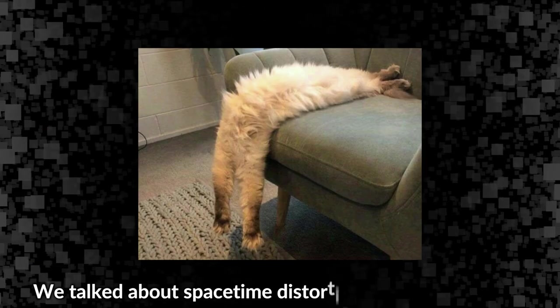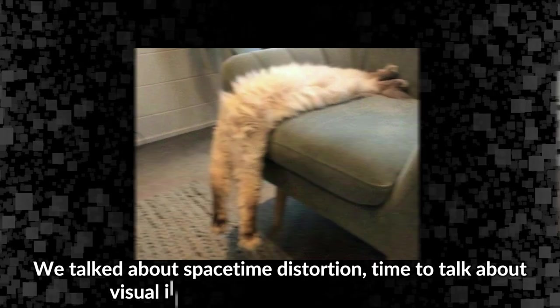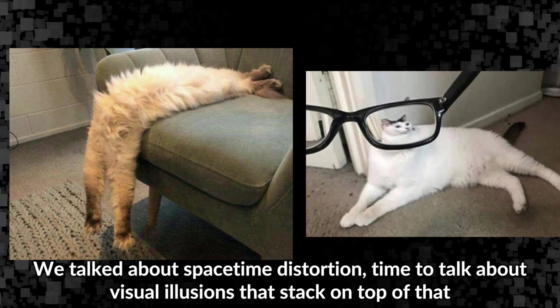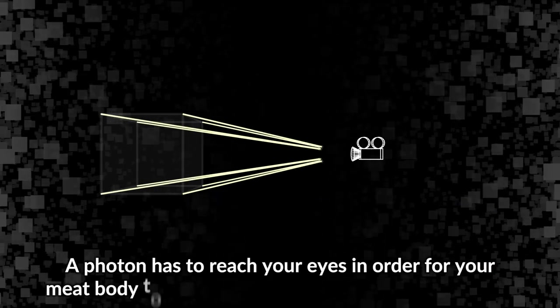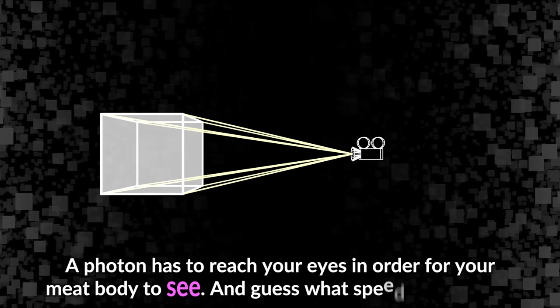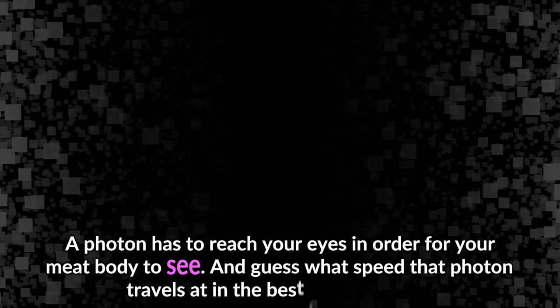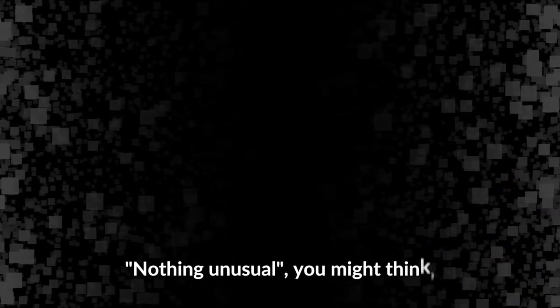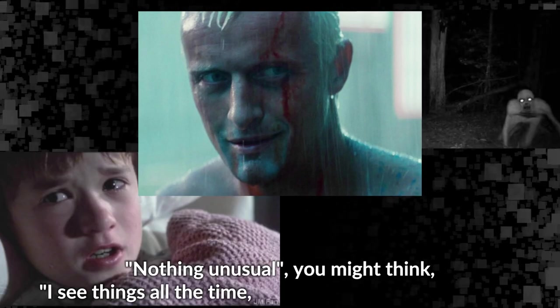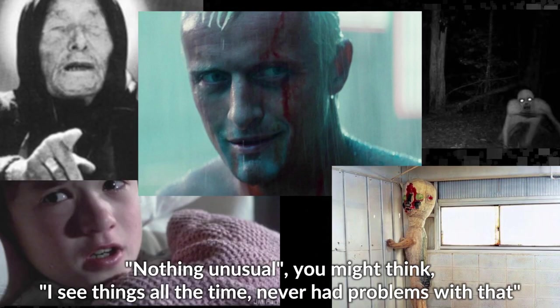But back to special relativity, we are not done yet. We talked about space-time distortion - time to talk about visual illusions that stack on top of that. A photon has to reach your eyes in order for your meat body to see. And guess what speed that photon travels at in the best case scenario? Indeed, same old speed of light in vacuum.